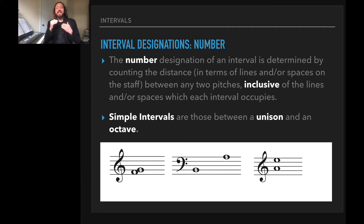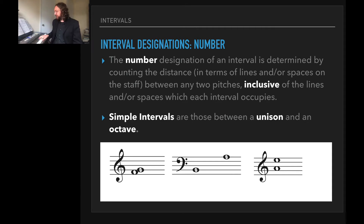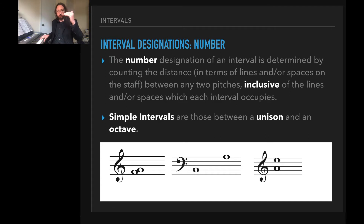This process is inclusive of the lines or spaces that each note of the interval occupies. We'll start usually with the lowest note and then count upwards, including the note that you begin on and the note that you end on. So for this first example, F and G — counting from F, one, then up to G, two — that makes a second.